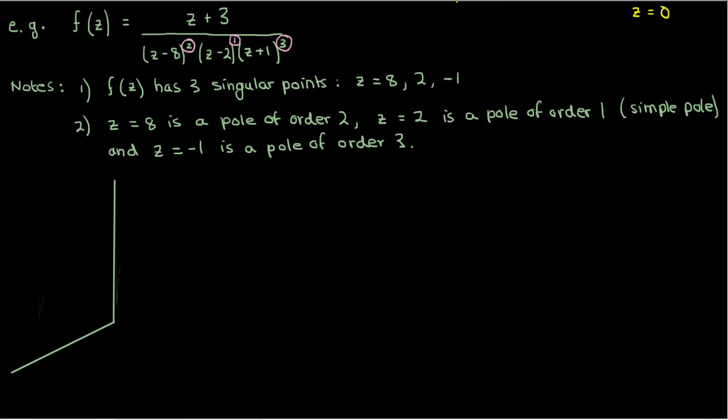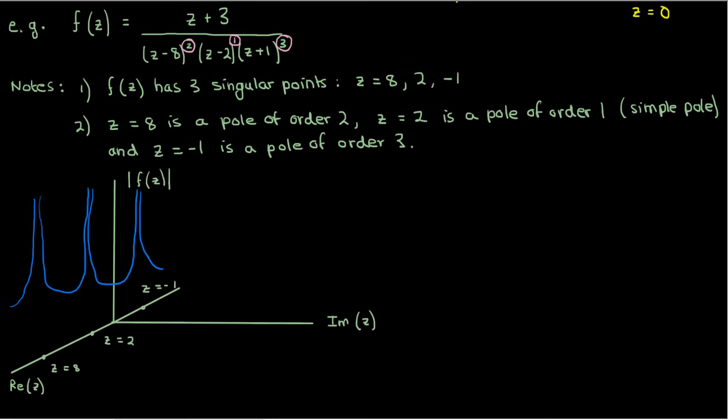Now you might wonder why I keep calling these singularities poles. The reason's pretty simple, but interesting. If I draw a surface plot of the magnitude of f over the complex plane, let's take the second example here. Then over the points of singularity, f of z's magnitude is going to approach infinity, so the surface will look like it has a huge spike in it at the point of the singularity. Since this spike looks like a pole, people decided to call the singularity a pole.